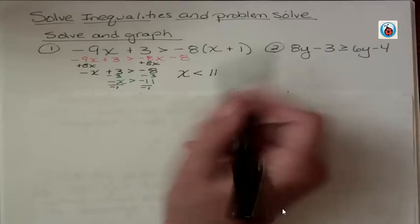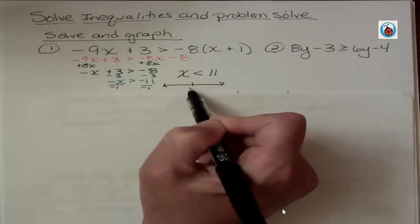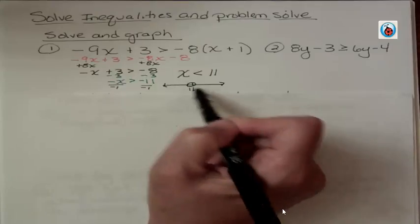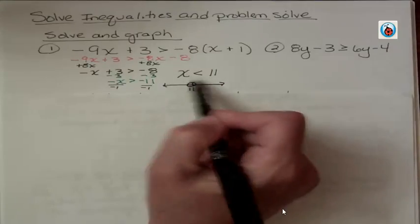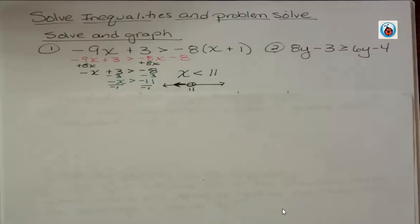When I want to graph that, the number I'm dealing with is 11. That's my starting point. I'm not going to shade it because there's no equal. And x is less than 11 so we're going to go to the left like that.